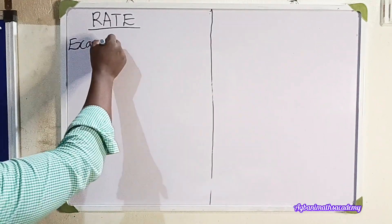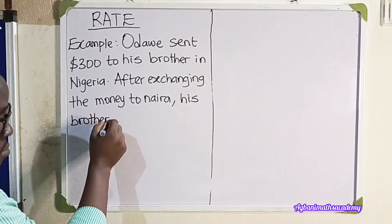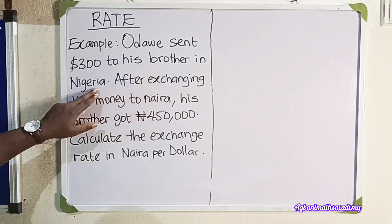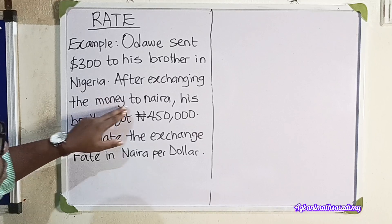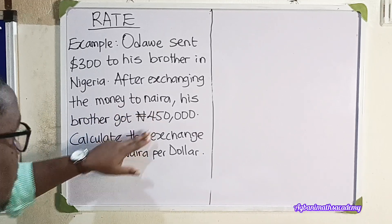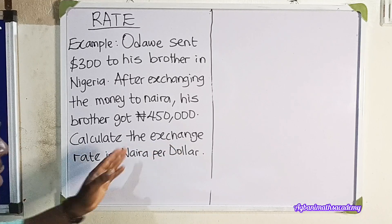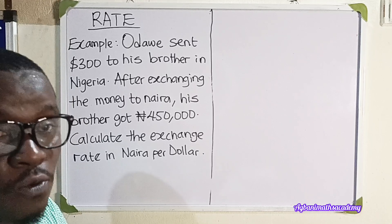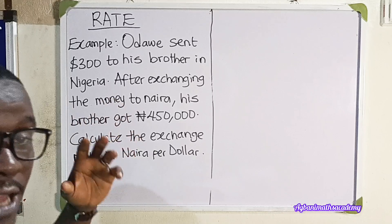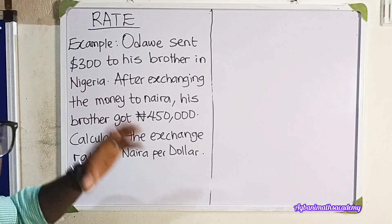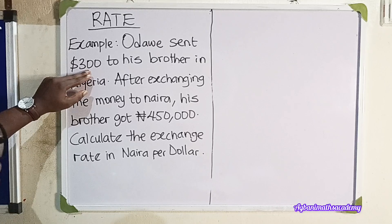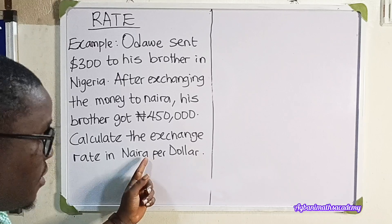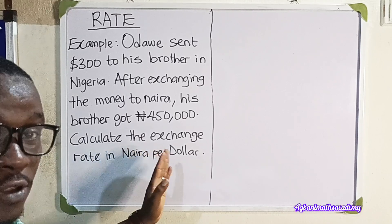Let's look at another example. We are told that Odawi sent $300 to his brother in Nigeria. After exchanging the money to Naira, his brother got 450,000 Naira. We are expected to calculate the exchange rate in Naira per dollar — that is, how many Naira equal $1. Take note of the unit rate: Naira per dollar means Naira comes first and dollar comes next.